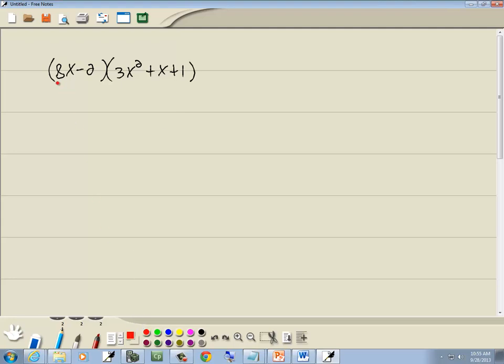So we're going to take our first term, the 8x, and we're going to multiply it times each term in our second set of parentheses, times the 3x squared, times the x, and times the 1. So let me write that out. So we've got 8x times 3x squared, we've got 8x times x, and we've got 8x times 1.